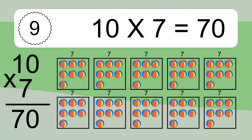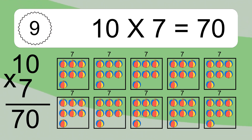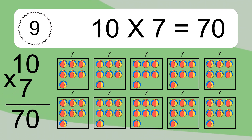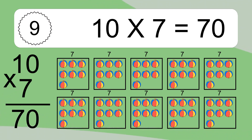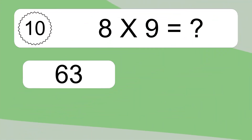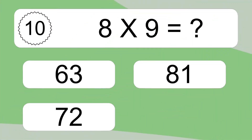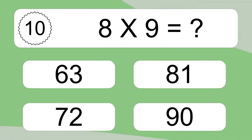We have 10 boxes and each box has 7 colorful balls inside. If you count all the balls in all the boxes together, you will have 10 times 7 balls. This equals 70 balls.